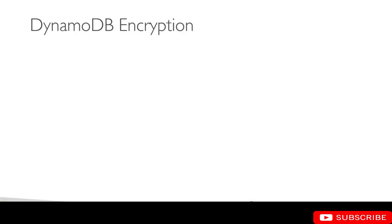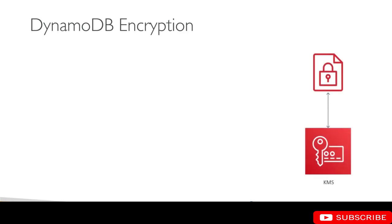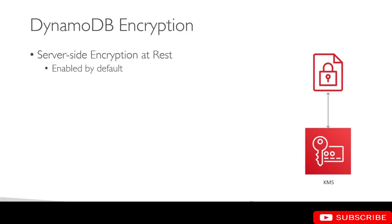In this lecture we are going to talk about DynamoDB encryption. DynamoDB is integrated with the KMS service. DynamoDB provides server-side encryption at rest, and this is enabled by default. If you want, you can disable encryption, but by default encryption is enabled and this is transparent to the user. You will still see the data in your AWS console, but it is stored encrypted. KMS uses 256-bit AES encryption for encryption at rest.